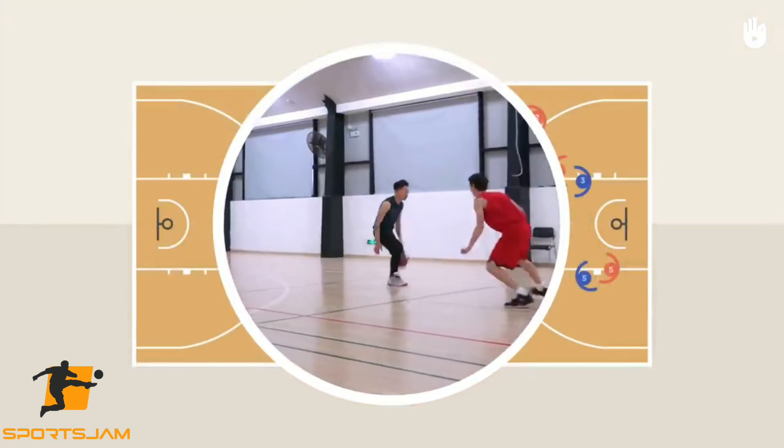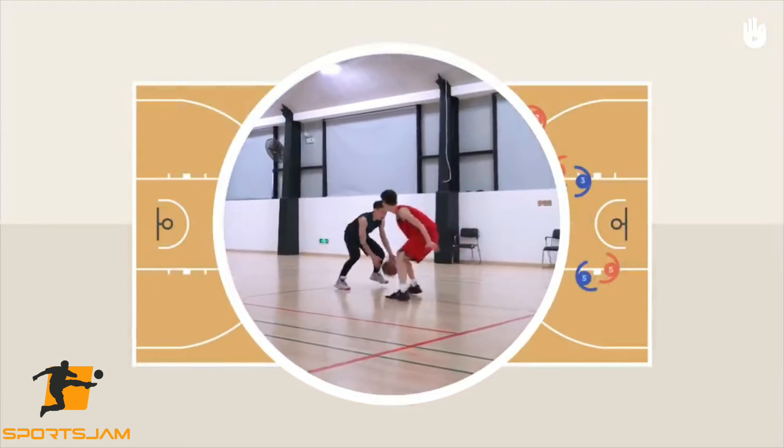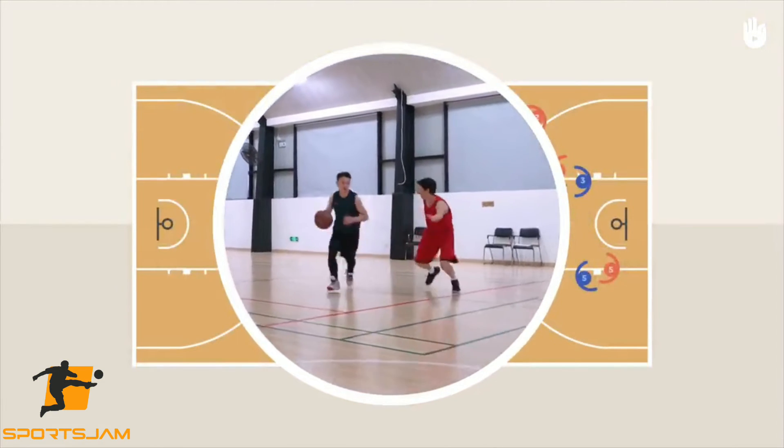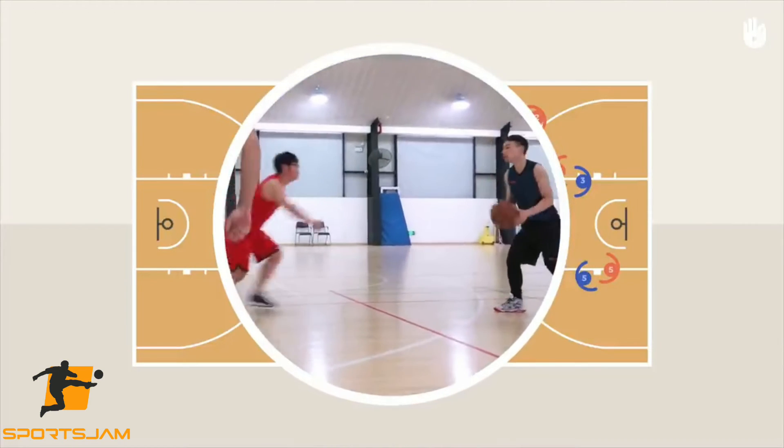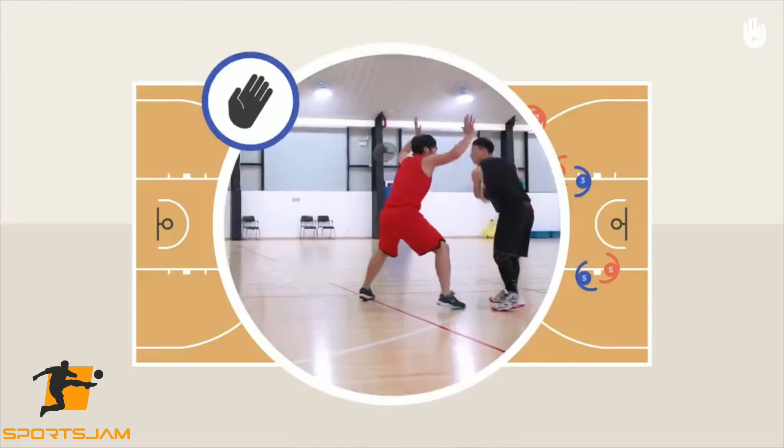To get the ball across the court, players can only move while dribbling, or pass the ball — they are only allowed to use their hands.